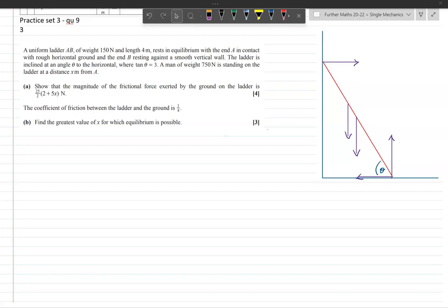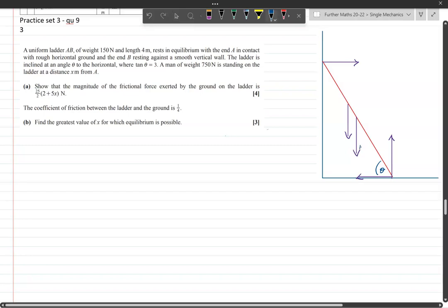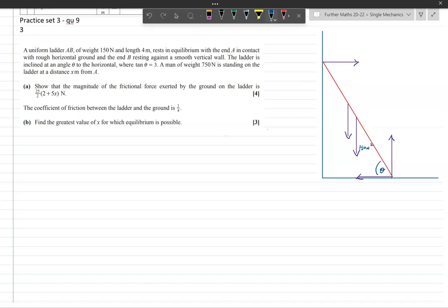I've just quickly written in all the forces in advance in purple on my diagram. It's uniform, so we can assume that the center of mass is in the middle of the rod, so that's 2 there, and it will be 2 from there to there. Then we're told that there's a man of weight 750 newtons a distance x up the ladder.